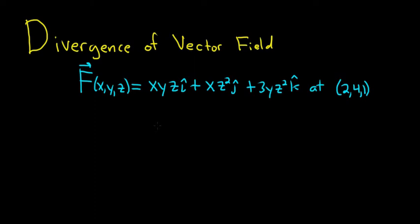Hey everyone, in this problem we have to find the divergence of this vector field at the point 2, 4, 1.